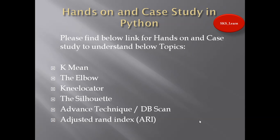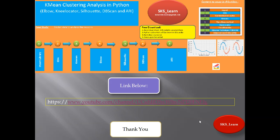I believe we have covered almost all the theoretical part of K-means. Now we are ready for hands-on and a case study in Python. In the next video, I'm going to show you live hands-on work — how to create a K-means model, how to plot it, how to create and plot an elbow, what is a new locator, what is silhouette, and we will also learn DBSCAN, which is an advanced technique beyond elbow and silhouette. After that, we'll cover ARI — Adjusted Rank Index. I'm going to upload this live case study very soon, so follow the links below. Thank you so much, and hopefully you liked this video.